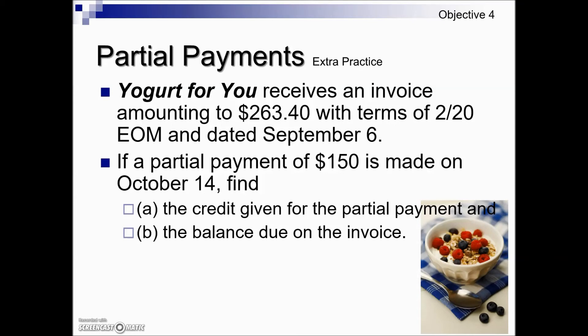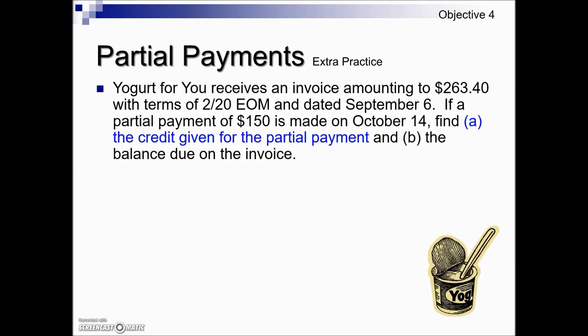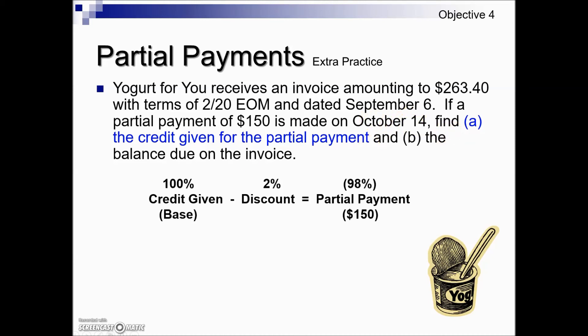In the final partial payment problem, Yogurt4U receives an invoice of $263.40 with terms of 2/20 EOM, dated September 6. A partial payment of $150 is made on October 14. The terms mean 2% discount if paid within 20 days of end of month. Since September 6 is early in the month, we take 20 days into October, making October 20 the discount deadline. A payment on October 14 qualifies.